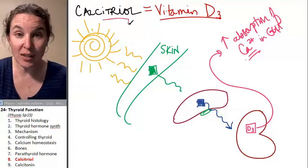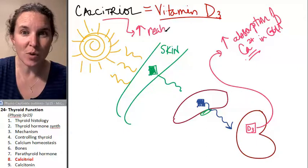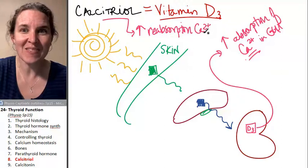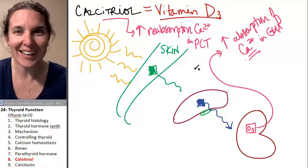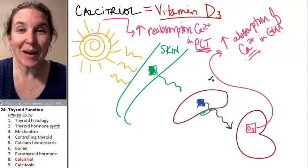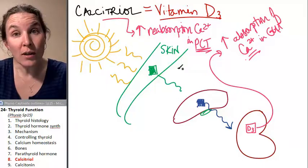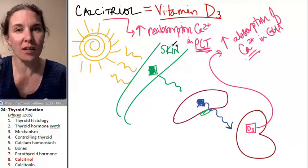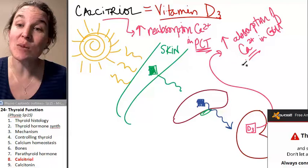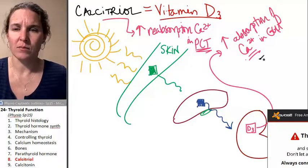In addition to this, calcitriol increases absorption or reabsorption of calcium in the proximal convoluted tubule. Really? Kidney is coming back at you. Yeah. So if you have low calcium, you're going to produce calcitriol which will increase calcium reabsorption, increases blood calcium levels, increases absorption of calcium in the gut.